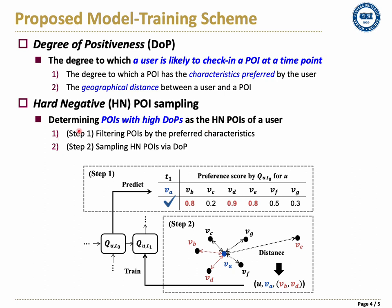Specifically, in step 1, we filter out POIs with a low degree of having the preferred characteristics. In this figure, POIs Vc, Vf, and Vg are excluded from the candidates. Then in step 2, we sample hard negative POIs with high DOPs by considering the geographical distance together. In this figure, POIs Vb and Vd are finally determined as the user's hard negative POIs.